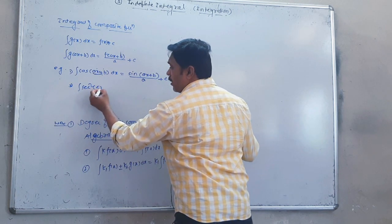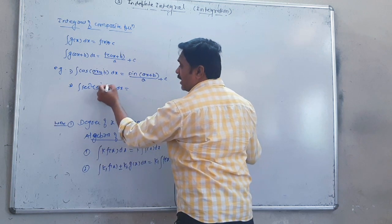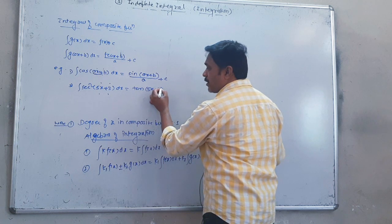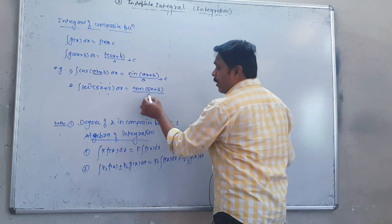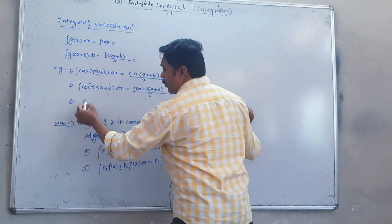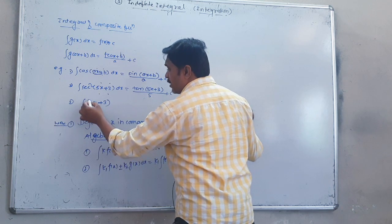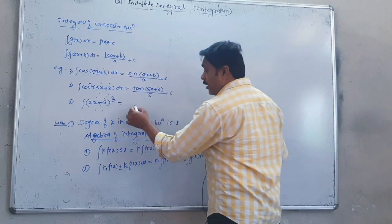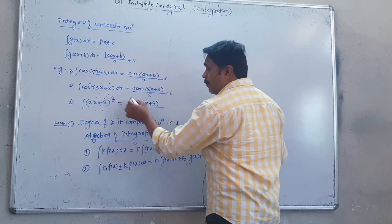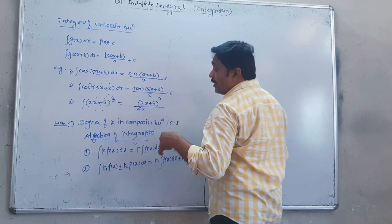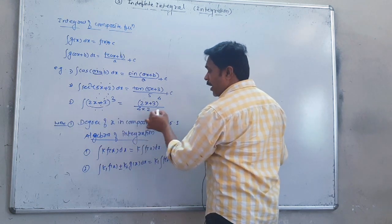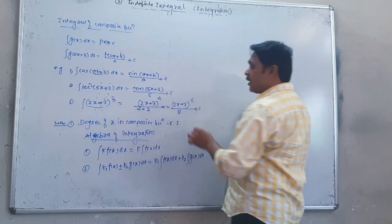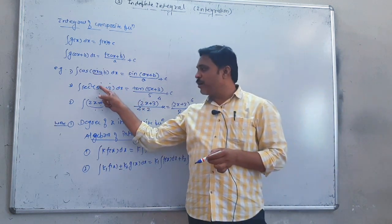For example, integral of cos of ax plus b dx: since the derivative of sin is cos, the integral of cos of ax plus b is sin of ax plus b, but we divide by the derivative of ax plus b, which is a. So the answer is sin(ax + b) upon a plus c. Another example: integral of sec squared of 5x plus 3. Since sec squared is the derivative of tan, the integral is tan(5x + 3) upon 5 plus c. For a polynomial example: integral of 2x plus 3x cubed, this gives 2x squared upon 2 plus 3x to the power 4 upon 4 plus c, which simplifies to x squared plus 3x to the power 4 upon 4 plus c.